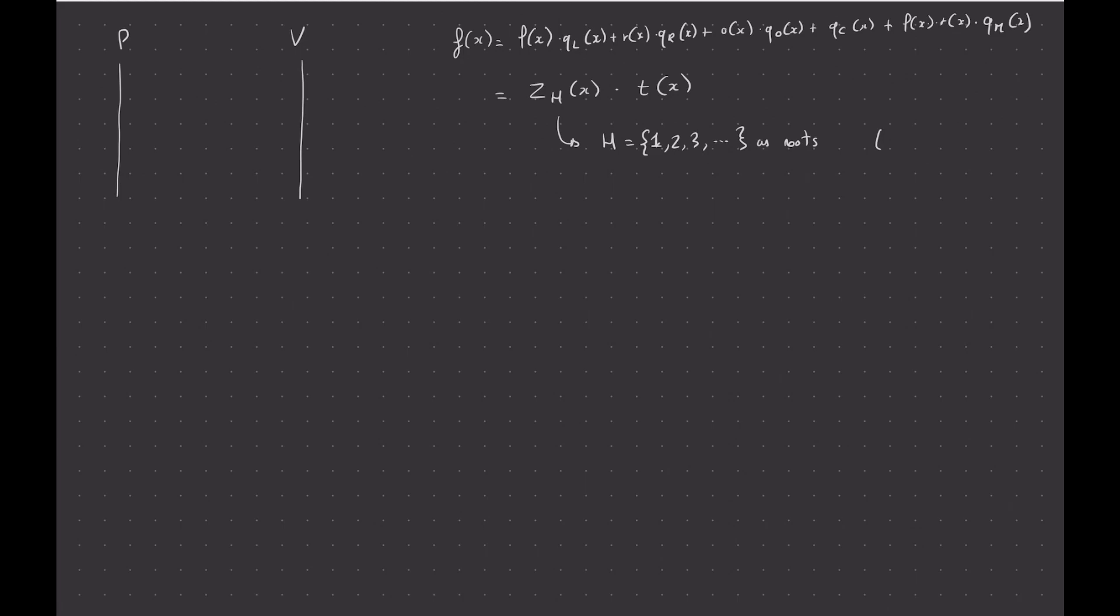So you can write it as 1 minus x, times 2 minus x, times 3 minus x, etc. So that's what we've seen previously. And we've also seen previously that these qls, these selector polynomials, correctly describe the circuit.